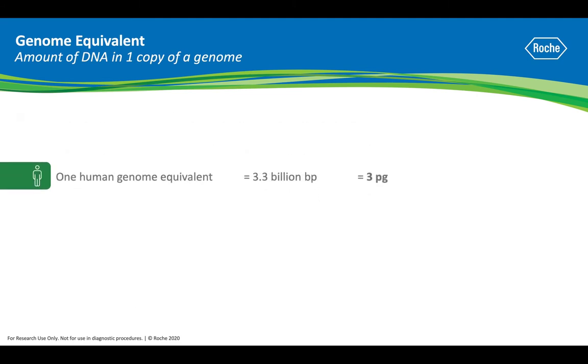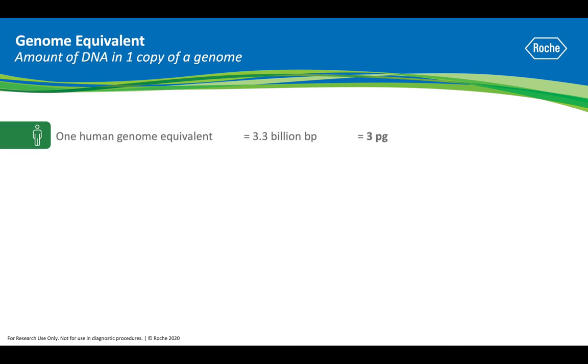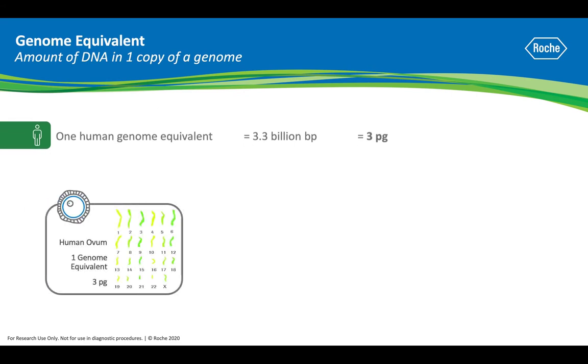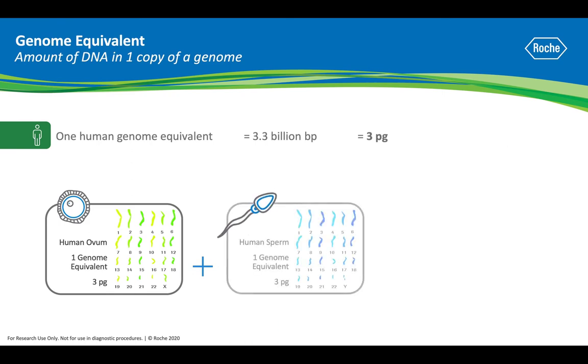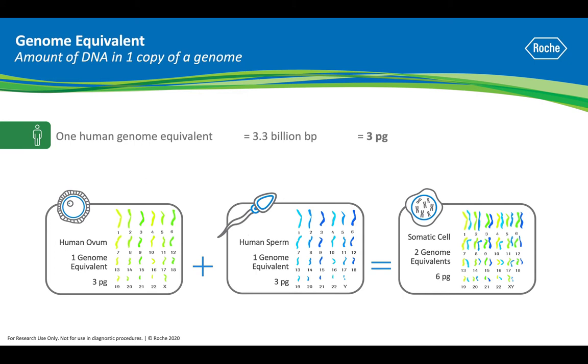The rest of this video, we'll focus on the human genome. A diploid human cell contains two genome equivalents — one from mom and one from dad — for a total of 6 picograms.